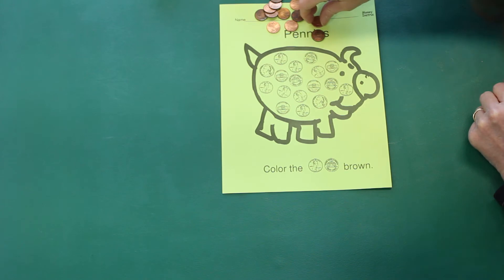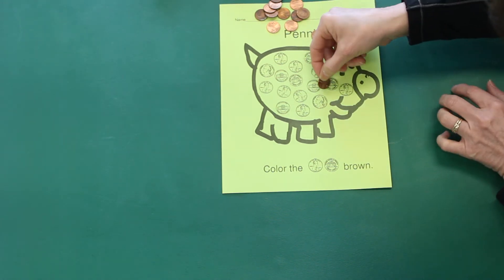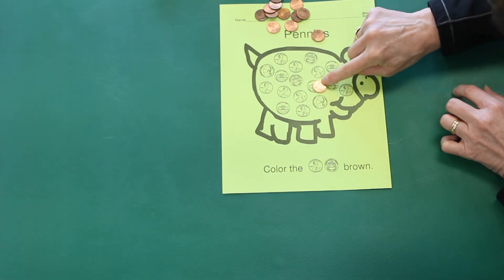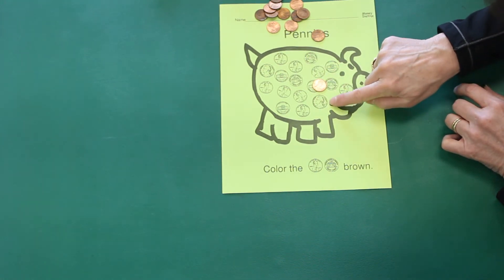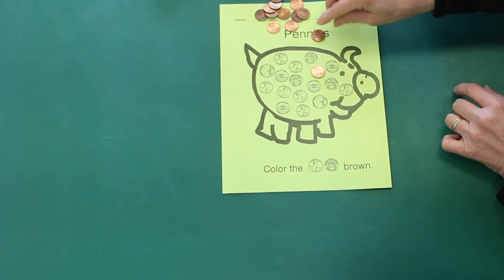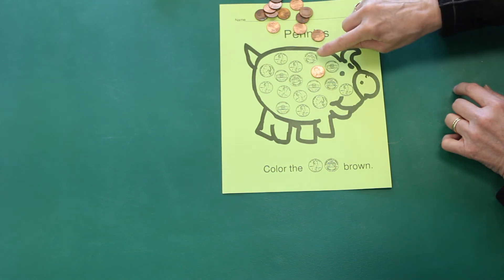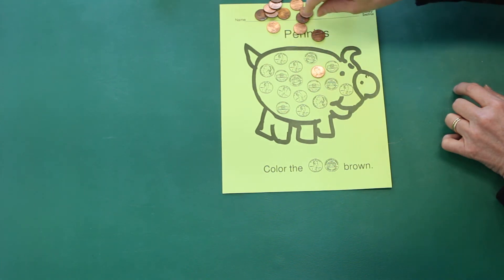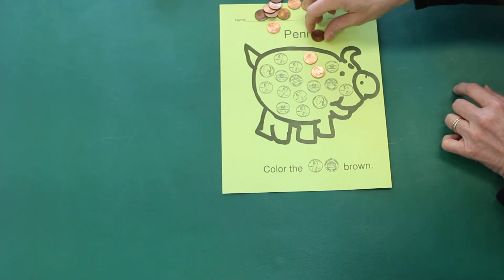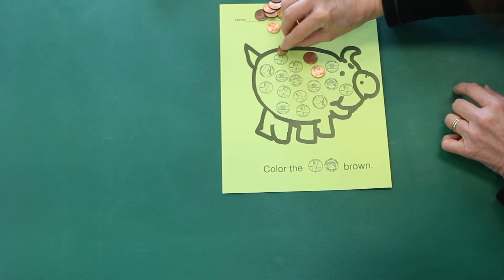Now make sure you don't match it to the wrong coin. What if I put my penny right there? Is that where my penny goes? No, that's a nickel. I need to find a picture of Abraham Lincoln there, right there. And you know what? You're going to find that there are some backs of the pennies here too, so you can match the backs too, but make sure your pennies only go on the pennies in the piggy bank.